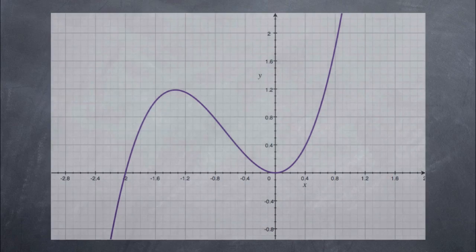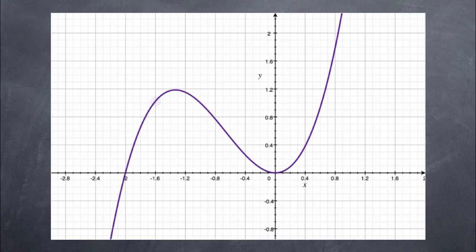But what about this graph? What is the slope or rate of change of this function at this point, or this one? What if we need to know the slope at both of these points? How can we find the slope of a curved surface?